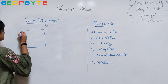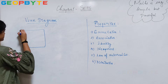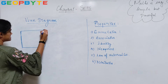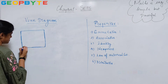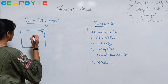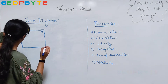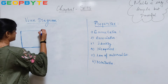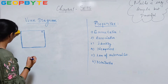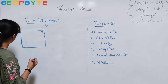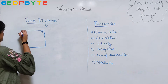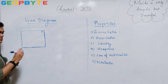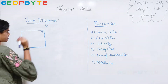This rectangle box represents my universal set. So this is my universal set.